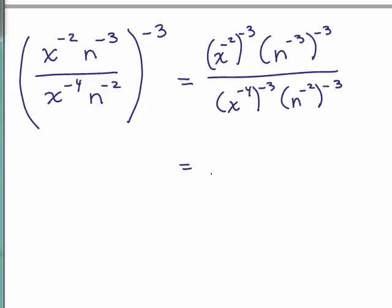All right, let's now use the power rule. So in the numerator, I'll multiply these exponents, negative 2 times negative 3 right here. So that gives me x to the 6, n to the 9. So x to the 6, n to the 9 over x to the 12, n to the 6. All right, almost done.